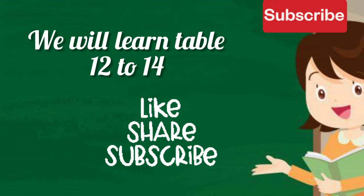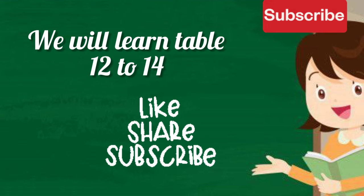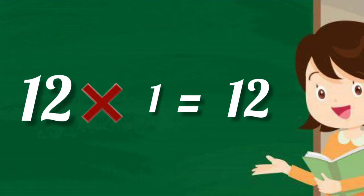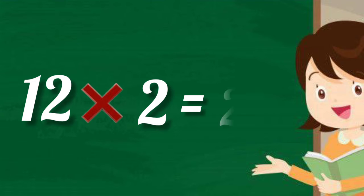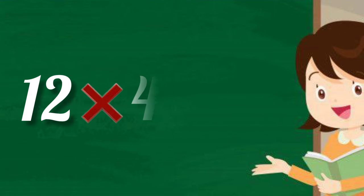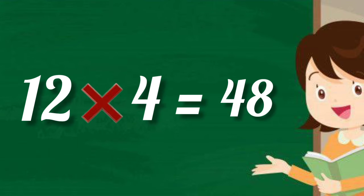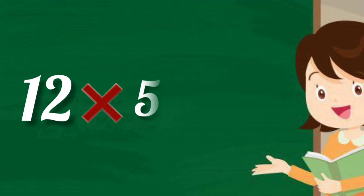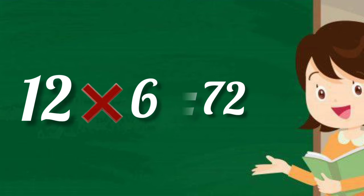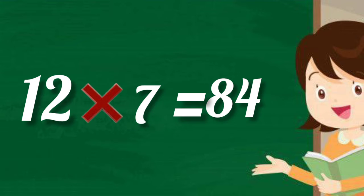12 zeros are 0, 12 ones are 12, 12 twos are 24, 12 threes are 36, 12 fours are 48, 12 fives are 60, 12 sixes are 72, 12 sevens are 84.